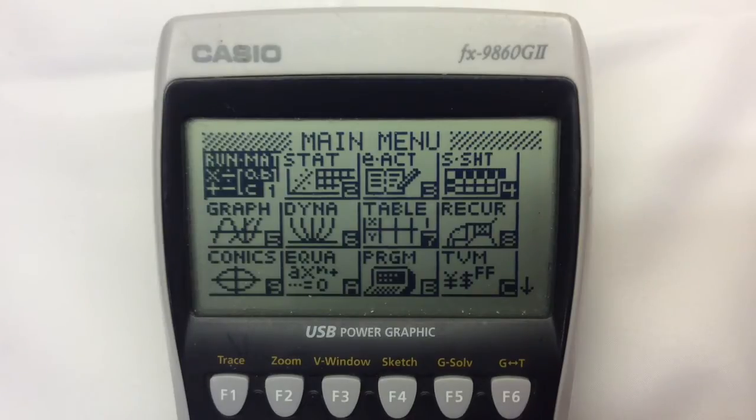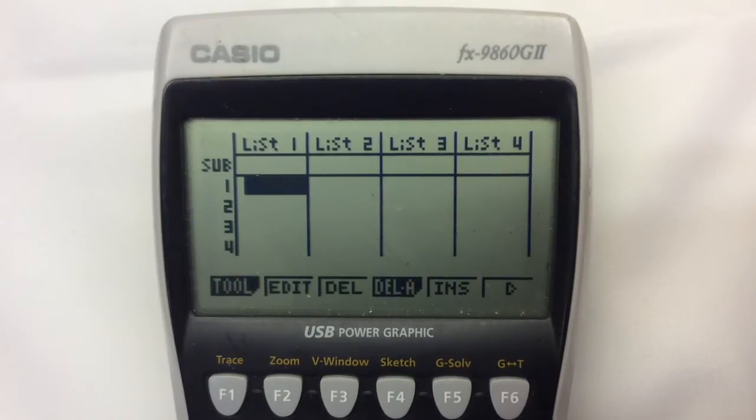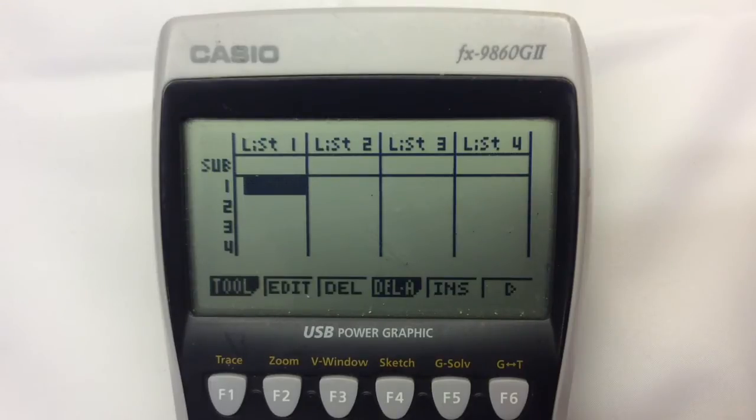So go into your stats mode as usual and we use the first column to represent the positions of our data. Our first group, group A, has three pieces of data in. What we're going to do is use the first column to show which group we're in and the second column to show what the data is.